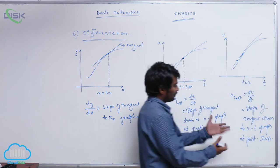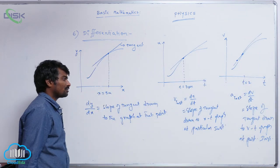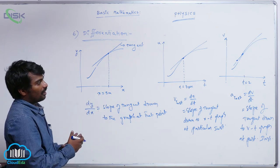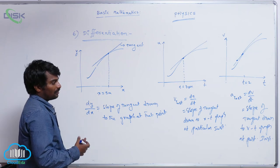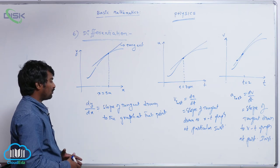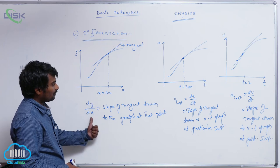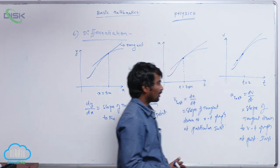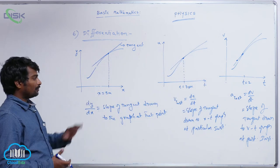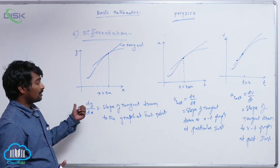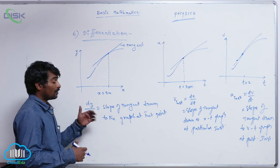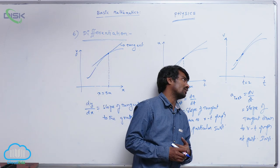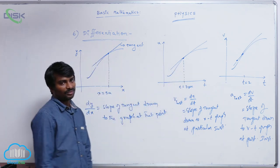Slope you can calculate. So that you can calculate instantaneous acceleration at that instant. This is the method how you can use the knowledge of differentiation in kinematics. And previously we have seen average change of y with respect to x, that knowledge we used to calculate average velocity from x-t graph, average acceleration from v-t graph.